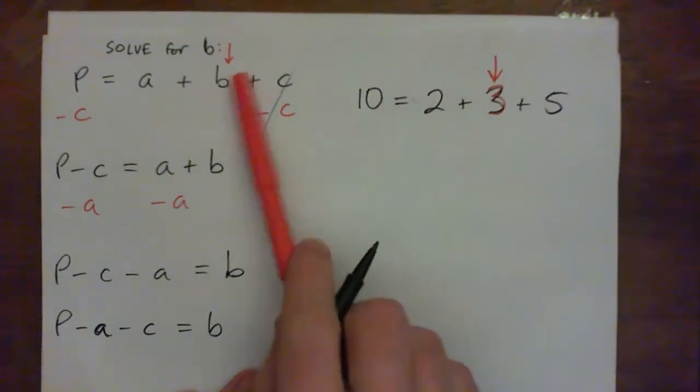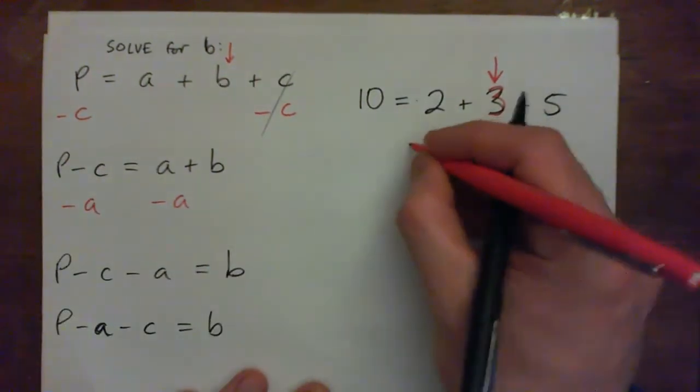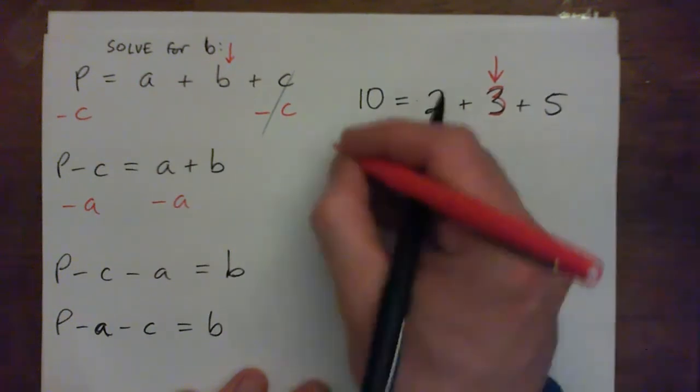So instead of solving for B, you're solving for 3. You could subtract 2 from both sides.